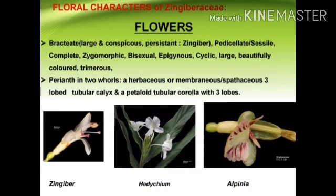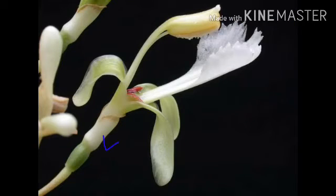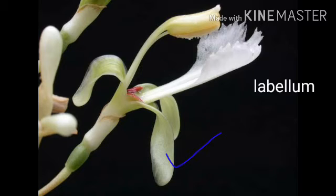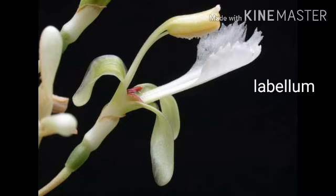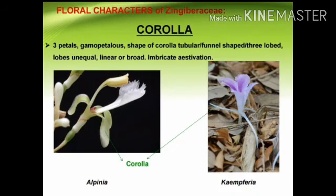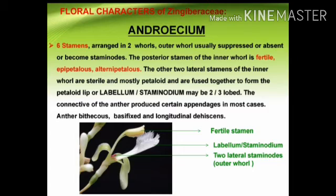The perianth lobes are differentiated into two whorls: the outermost herbaceous or membranous three-lobed calyx, which may be spathaceous or tubular, and the petaloid tubular corolla with three lobes — it is trimerous. The calyx consists of three sepals, gamosepalous, tubular, cylindrical, or spathe-like shape, generally three-toothed, green, and all sepals anterior. The corolla also consists of three petals, gamopetalous; the shape may be tubular, funnel-shaped, or three-lobed, with lobes that are unequal, linear, or broad.